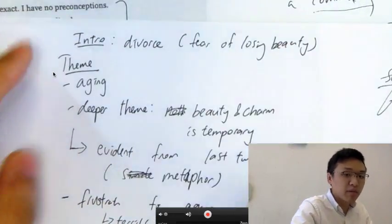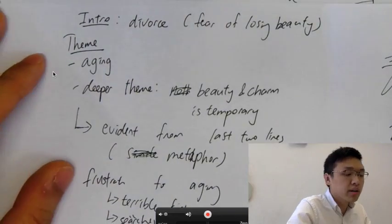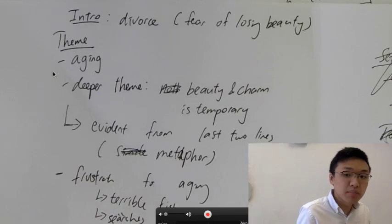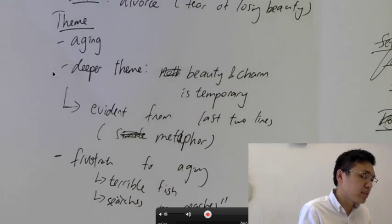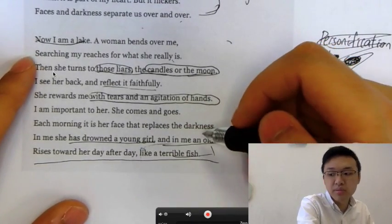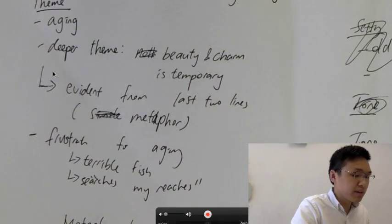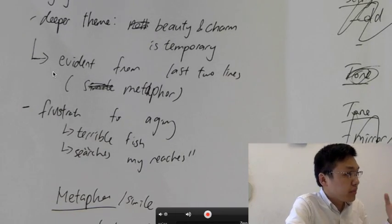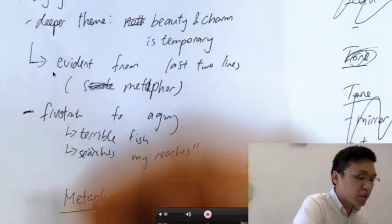The first aspect is the theme. Obviously, the theme of this poem is aging. The deeper theme is that beauty and charm is temporary, and that as time passes, this beauty and charm, youth is going to disappear. So it is very evident that the aging process is very evident from the last few lines. So each morning, it is her face that replaces me with darkness. In me, drowns a young girl. And in me, a woman rises to her day after day. So this is basically about how every day, the youth is fading every day. This metaphor shows. And also shows the frustration and the desperation that comes with aging.